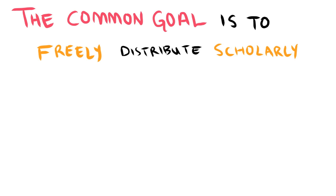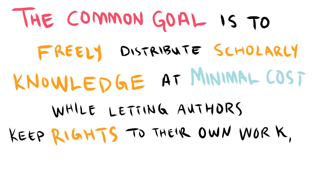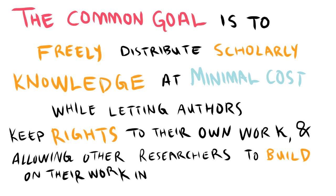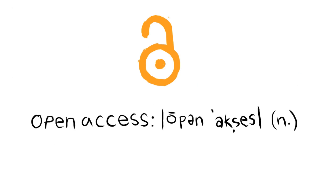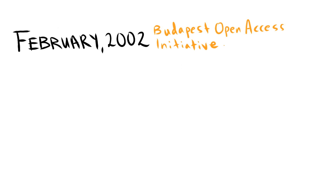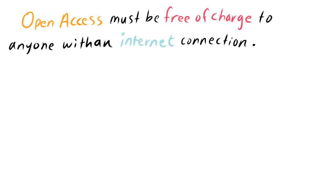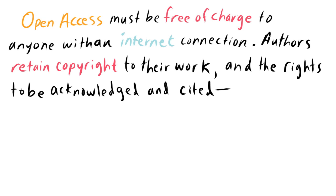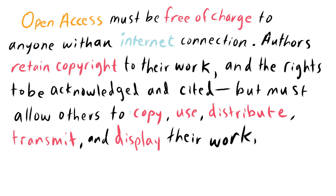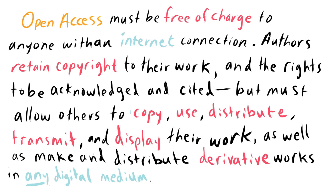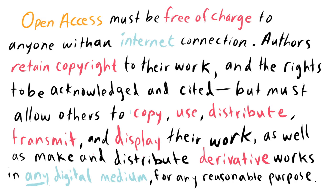The common goal is to freely distribute scholarly knowledge at a minimal cost, while letting authors keep the rights to their own work and allowing other researchers to build upon prior work in new and innovative ways. There's no one definition of open access on which everyone agrees. Open access was first defined in 2002 by the Budapest Open Access Initiative. Two more statements followed a year later with slightly different ideas about which barriers should be removed and which rights granted and retained, but all three statements share common ground: that open access must be free of charge to anyone with an internet connection, that authors retain copyright and the rights to be acknowledged and cited, but must allow others to copy, use, distribute, transmit and display their work, as well as make and distribute derivative works in any digital medium for any responsible purpose. In other words, open access removes price and permission barriers to access and use.